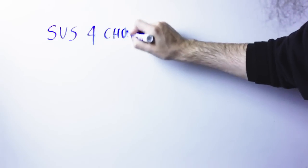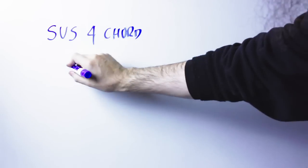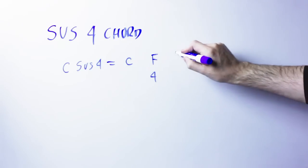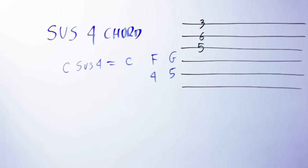First of all, what is a suspended fourth chord? It's simply a chord made by a perfect fourth and a perfect fifth. Meaning, a C suspended fourth chord will be the C note, then the note a perfect fourth above, an F, and the note a perfect fifth above, G. And so it will sound this way.